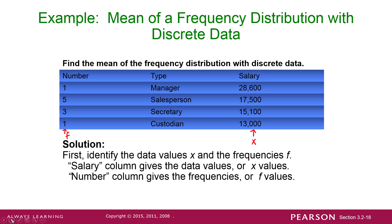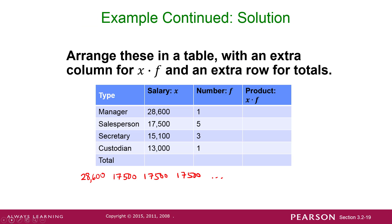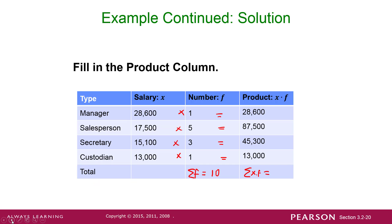Then we did this example, and it was a list of salaries, and how many people had that salary was the frequency. And so we multiplied straight across to find the average. We multiplied straight across. We added up each of these columns.